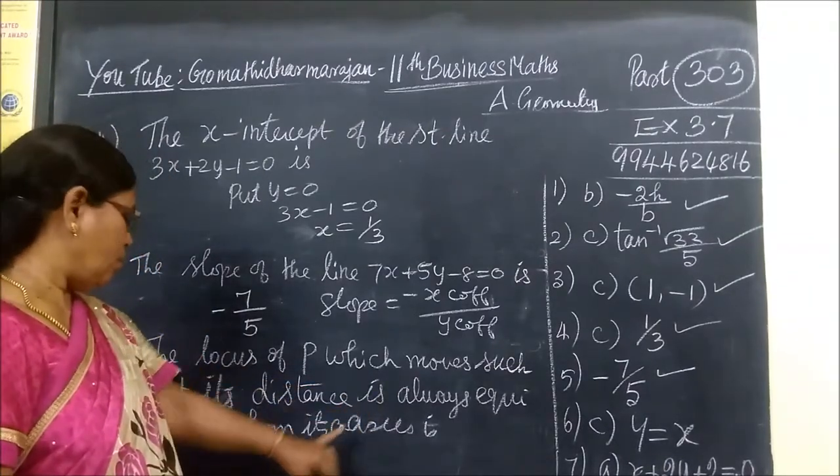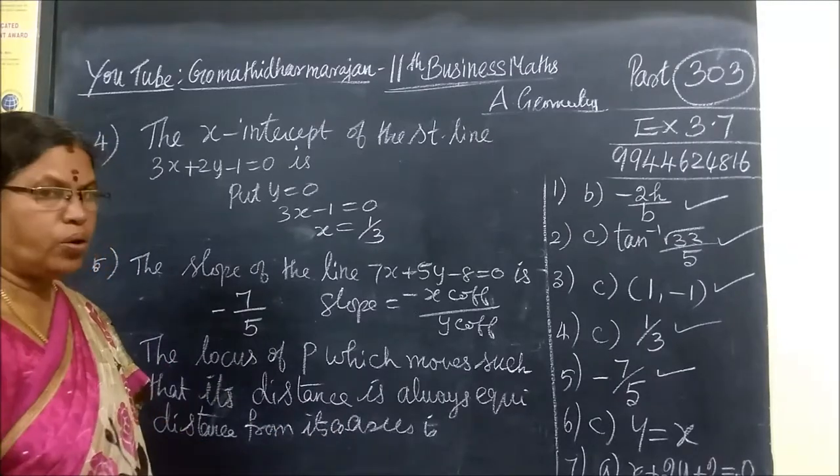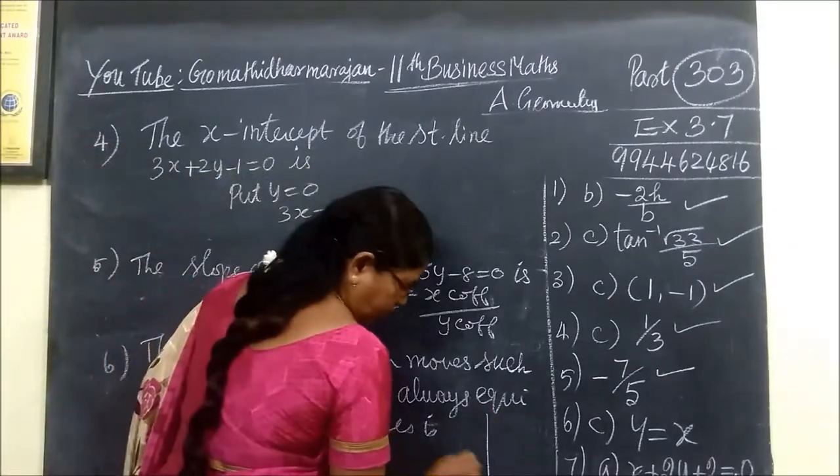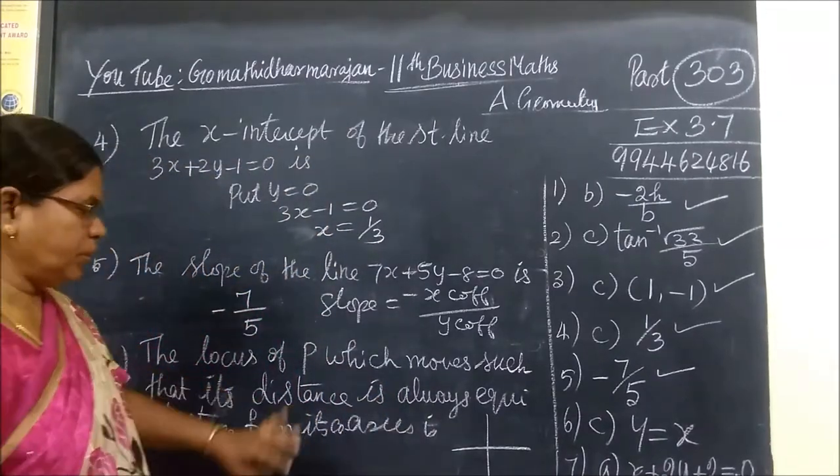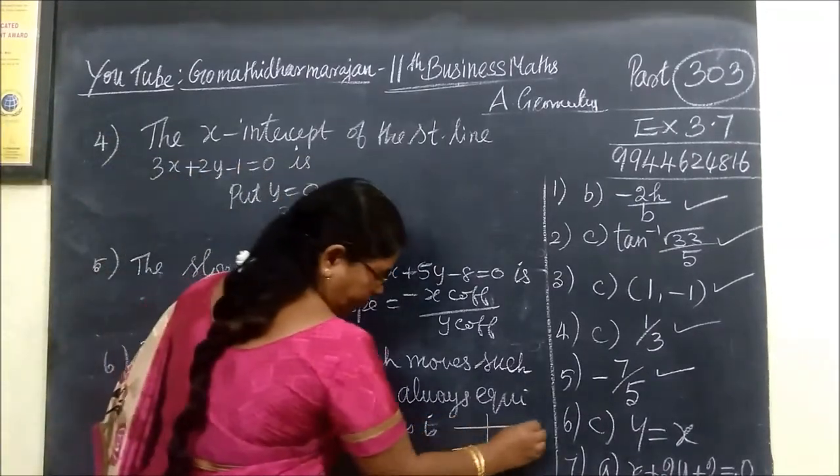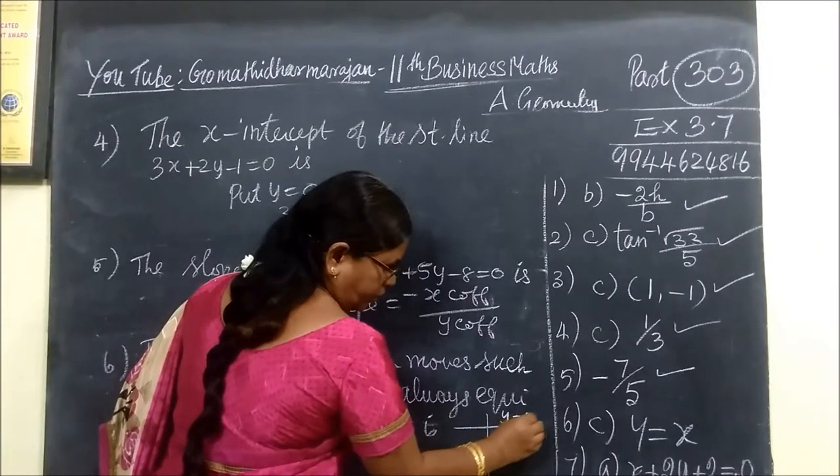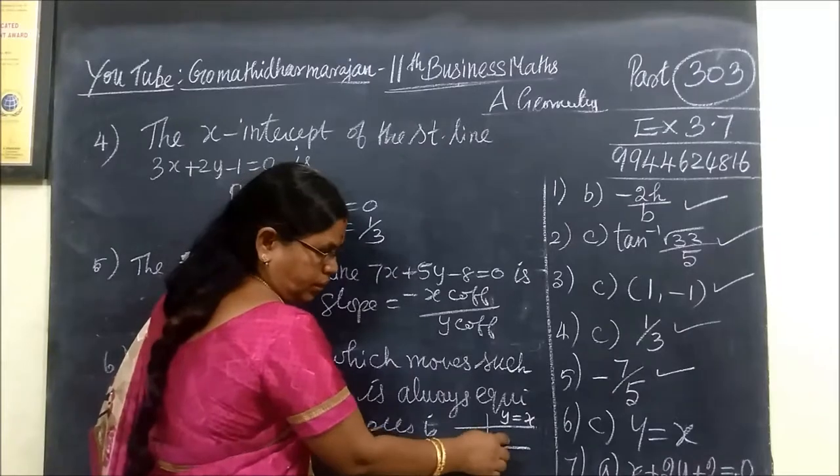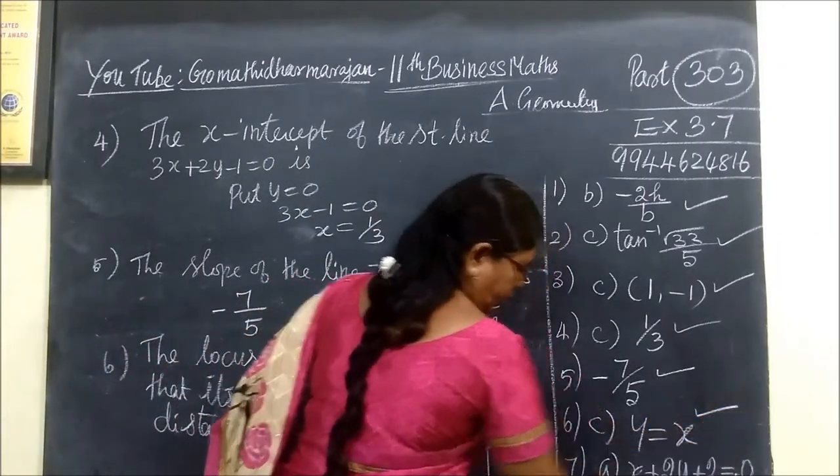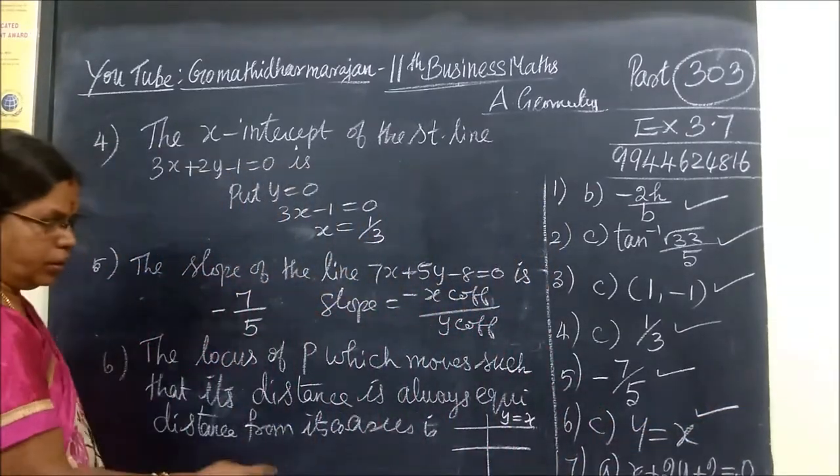The locus of point P which moves such that its distance is always equidistant from the coordinate axes. The answer is y = x.